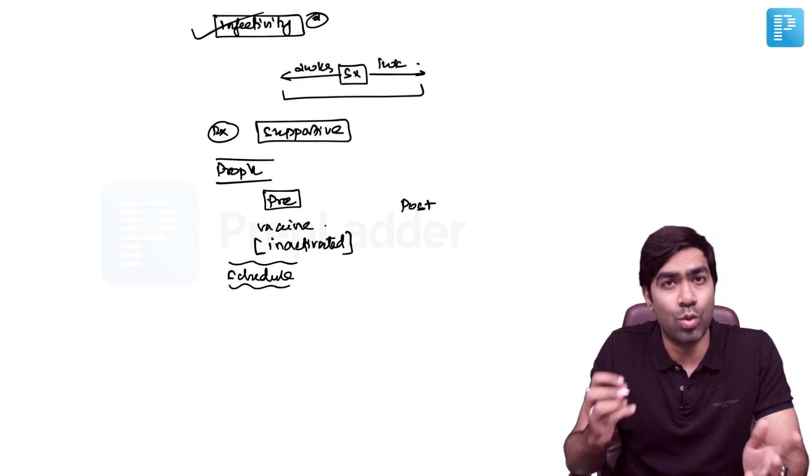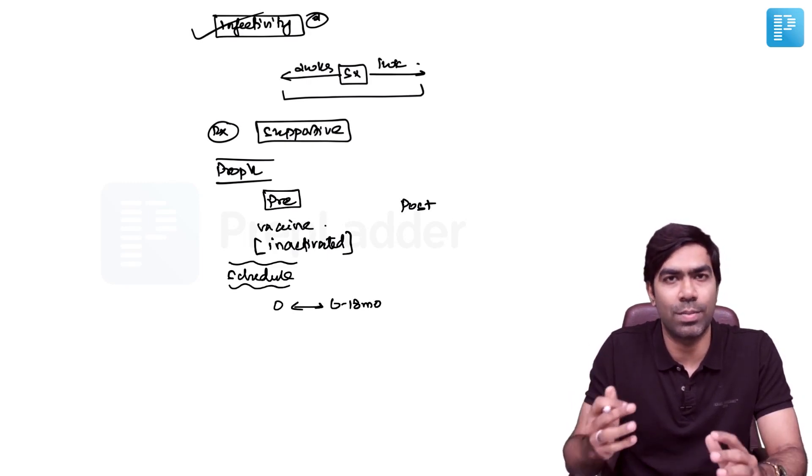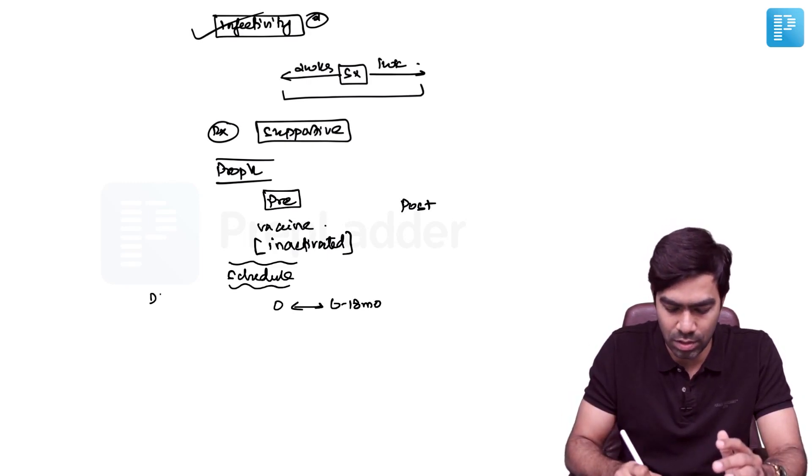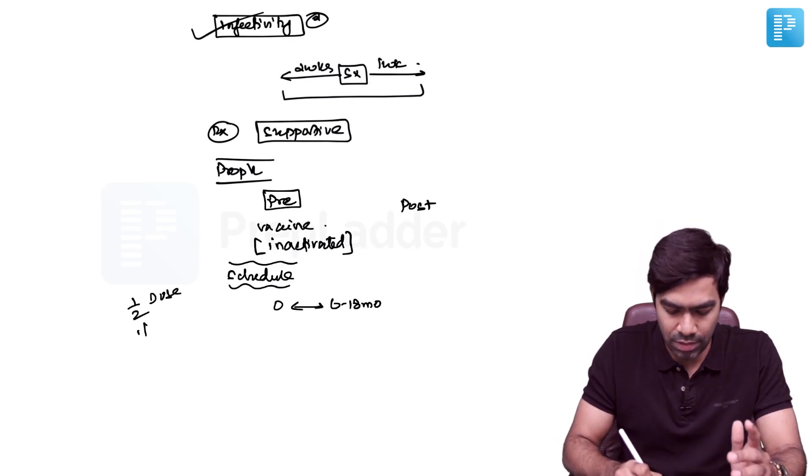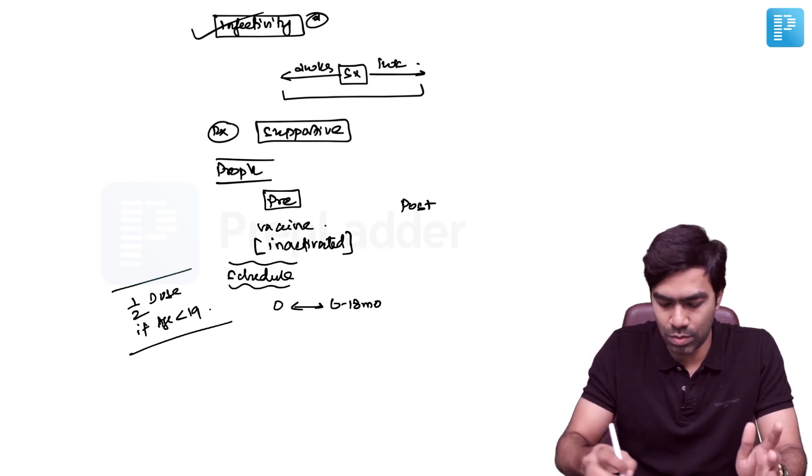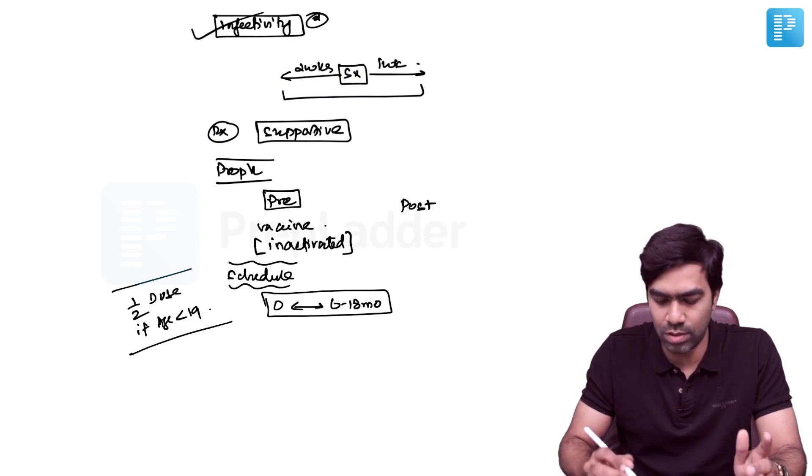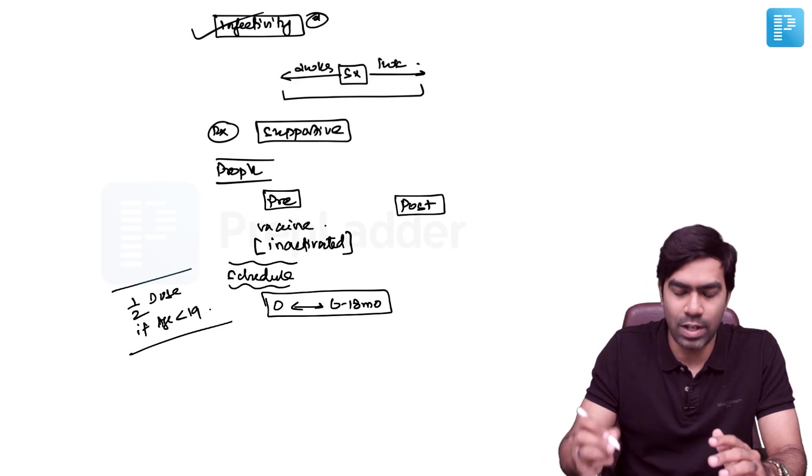It comprises two doses given 6 to 18 months apart. After the first dose, the second dose is given 6 to 18 months apart. The dose should be halved if age is less than 19. Adolescent or younger population should receive only half dose, but the dosing schedule is two doses 6 to 18 months apart.